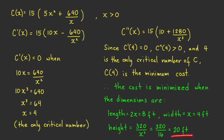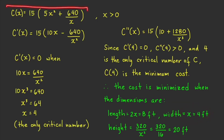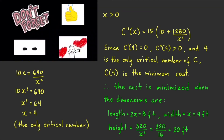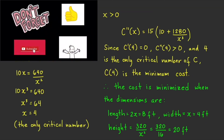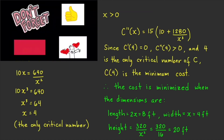If you're looking for the minimum cost, plug x = 4 into the cost function to get the minimum cost. I hope you enjoyed this video — please like, share, and subscribe to help grow this channel. Thanks for watching and I'll see you next time!